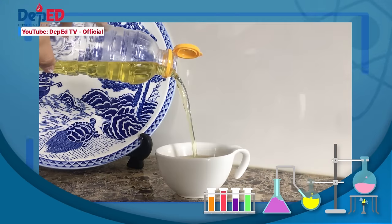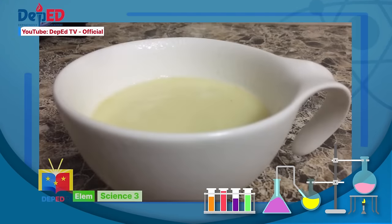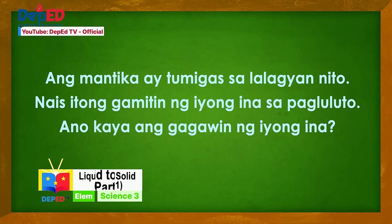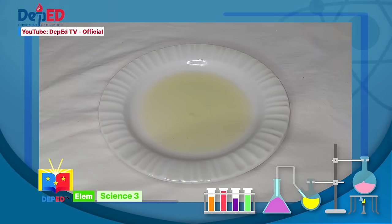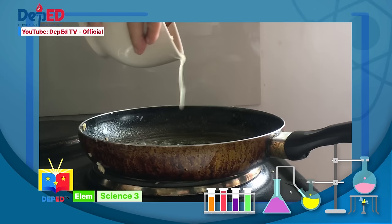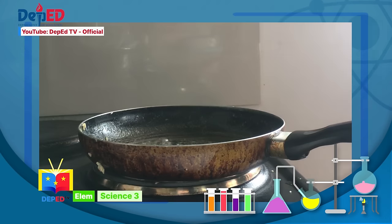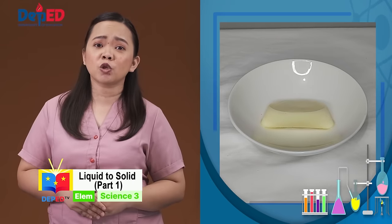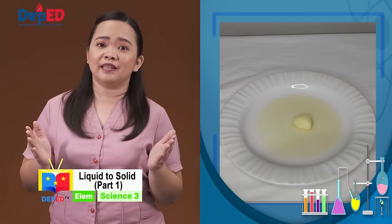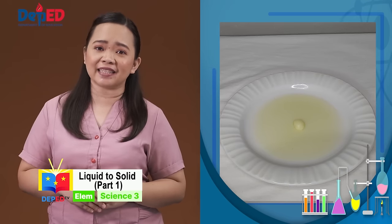Sagutan muna natin ang takdang aralin na aking ibinigay sa inyo. Ang mantika ay tumigas sa loob ng lalagyan nito. Nais itong gamitin ng iyong ina sa pagluluto. Ano kaya ang gagawin ng iyong ina? Sa pamamagitan ng melting, kailangan itong painitan upang magamit ang tumigas na mantika sa pagluluto.